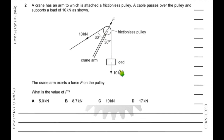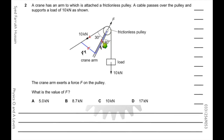You need to resolve the two forces of 10 kilonewtons, each making a 30-degree angle with the crane arm. Using resolution of vectors, I'll complete the triangle. These two forces are vectors to be added, and this is the resultant vector. This gives FX and FY. FY has no link with F because F is on the horizontal axis, balancing FX. So FX equals F cos theta, which becomes 10 cos 30.